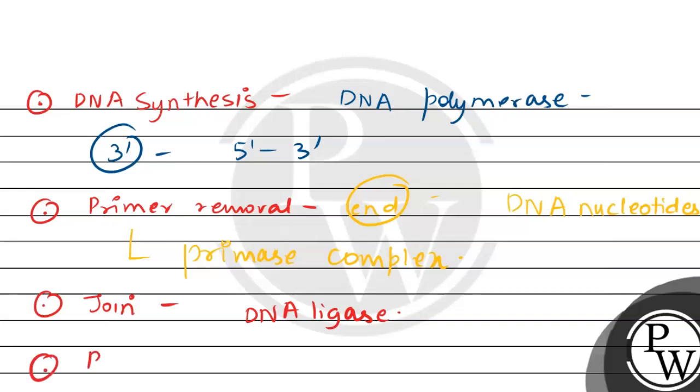After that, you have proofreading and error correction. DNA polymerase adds nucleotides and also works with a proofreading mechanism. If there is a mismatch, it will be properly checked and corrected. This is the proper summary for the events that happen in the replication fork.